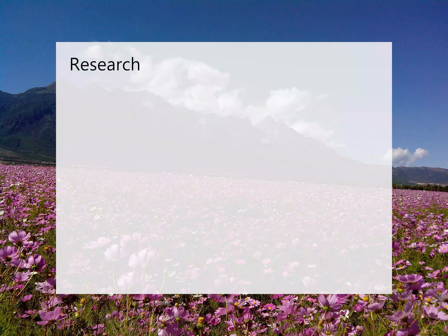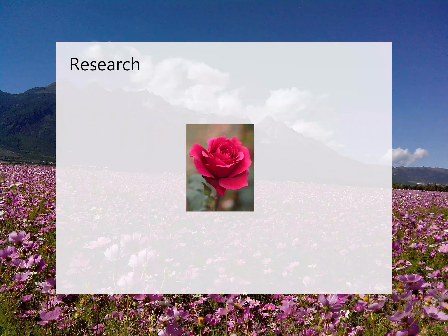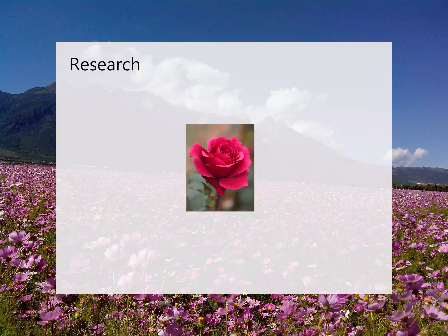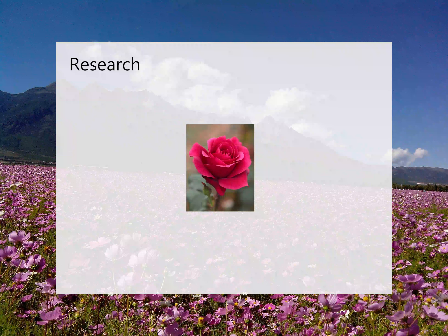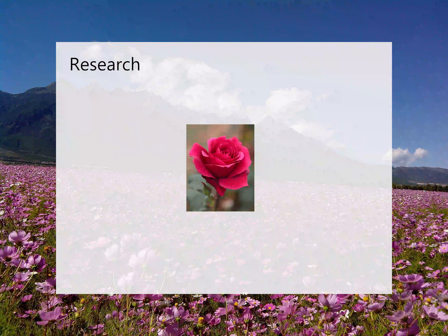For example, rose is known to symbolize love and beauty. On Valentine's Day, many people give a rose to the person they like. I think that's what a rose means for people.